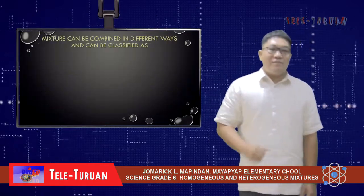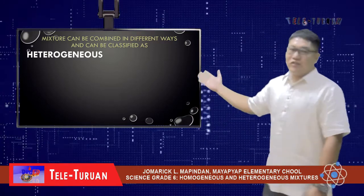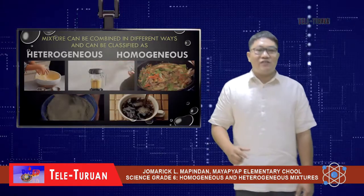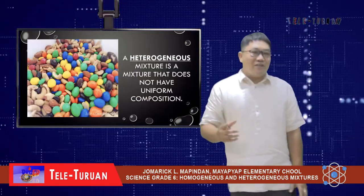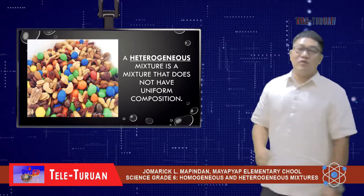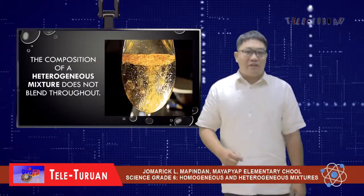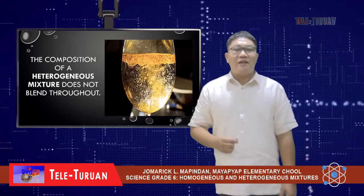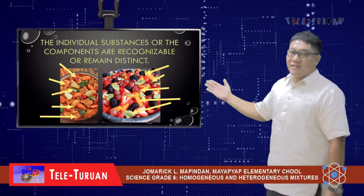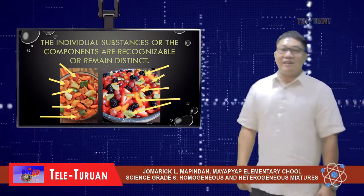Mixtures can be combined in different ways. They can be classified as heterogeneous or homogeneous. A heterogeneous mixture is a mixture that does not have uniform composition. The composition of a heterogeneous mixture does not blend throughout — the individual substances or components are recognizable and remain distinct.